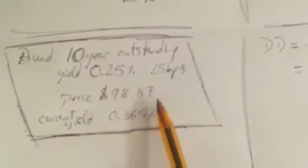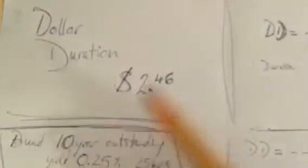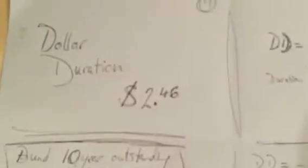The current market value is $98.87 and the current yield is 0.365%, or 36.5 basis points. So I want to see how many dollars of price appreciation or depreciation we're going to get,